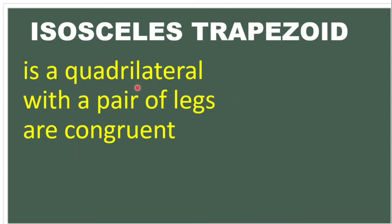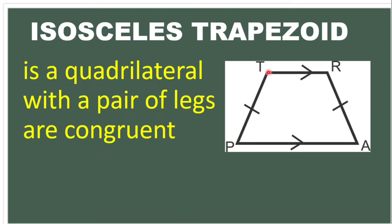We also have the isosceles trapezoid. It is a quadrilateral with a pair of legs that are congruent. In this example, side TR is parallel to side PA, which makes it a trapezoid. It is called an isosceles trapezoid because it has a pair of legs that are congruent.